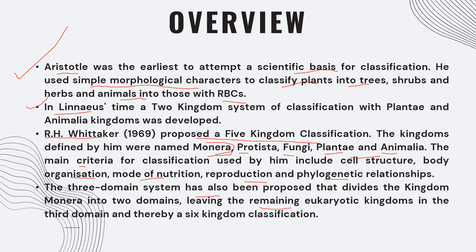The two-kingdom classification was inadequate because it grouped together eukaryotes and prokaryotes, unicellular and multicellular organisms, and photosynthetic and non-photosynthetic organisms all under plants. This is why it could not be accepted, and we moved to the five-kingdom classification.